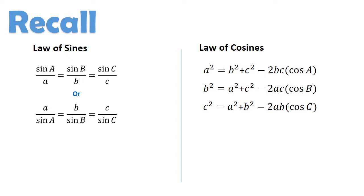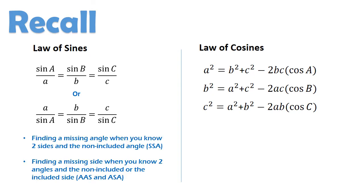As a review, paano nga ba natin malalaman kung ano at kailan natin pwede i-apply ang mga laws na ito? We apply the Law of Sines during the following instances. First, when you are asked to find a missing angle at ang given A2 sides and the non-included angle, or SSA. Second, when you are asked to find a missing side at ang given A2 angles and the non-included or the included side, that is, AAS and ASA respectively. Notice that the Law of Sines must work with at least two angles and two respective sides at a time. Kaya, be sure to use a pair that corresponds to your given information.